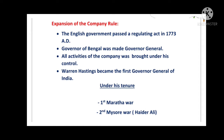This is how Warren Hastings was made the first Governor General of India. During his tenure, two wars took place: the first one was the Maratha War and the other was the Second Mysore War. The East India Company was under trouble as it had to face both powers together — the Marathas and Mysore.